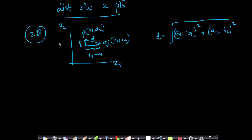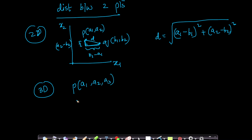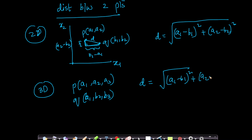Similarly, in 3D, if you have two points P = (A1, A2, A3) and Q = (B1, B2, B3), the distance between P and Q is the square root of (A1 − B1)² + (A2 − B2)² + (A3 − B3)². Again, this can be proven using the Pythagorean theorem applied multiple times.